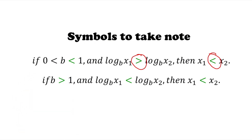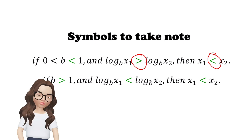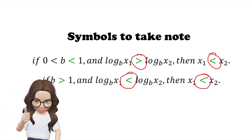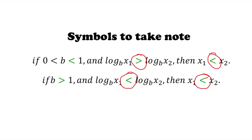The second case is: if b is greater than 1 and the logarithm of x₁ with base b is less than the logarithm of x₂ with base b, then x₁ is less than x₂. If the base is greater than 1, the inequality symbol will remain. Let us now proceed to example number 1.